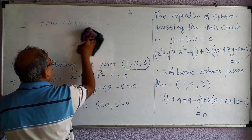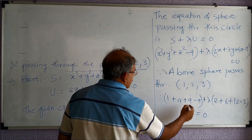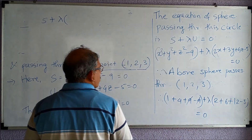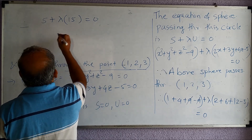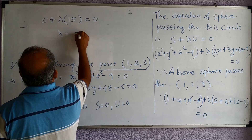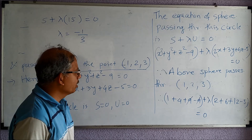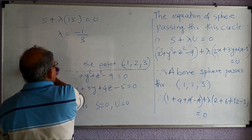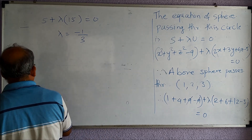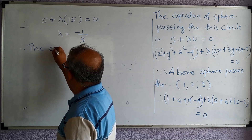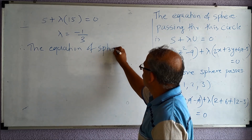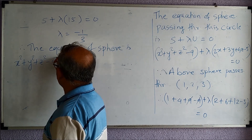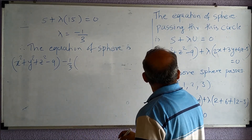Simplifying, we get 5 plus λ times 15 equal to zero, so λ equals minus 1 upon 3. Now we put our λ back into the sphere's equation to get the required answer. Therefore the equation of the sphere is: x squared plus y squared plus z squared minus 9, minus 1/3 times (2x plus 3y plus 4z minus 5) equal to zero.